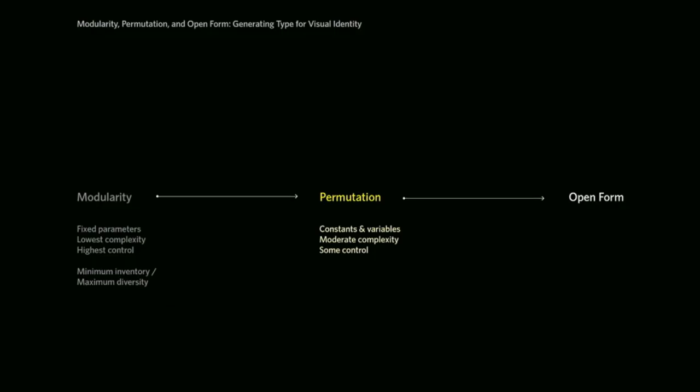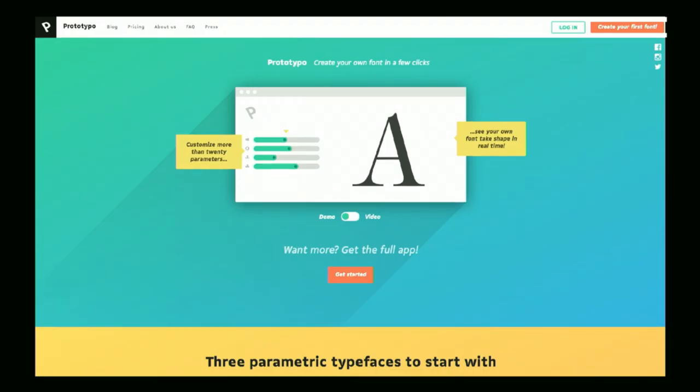Permutation deals with constants and variables. You're still talking about parameters, but now the parameters are less fixed — they're allowed to fluctuate a little bit. This is moderately complex and the designer is releasing some control over the final outcome. Another tool we might be more familiar with is Prototypo, where you're not necessarily controlling all of the variables. You're allowing interpolation and the code that the application has controls some of those things — you're simply sliding a slider and allowing it to do what it does.